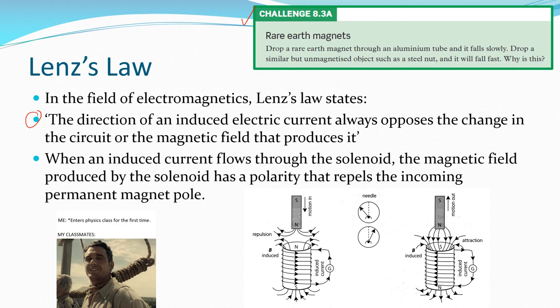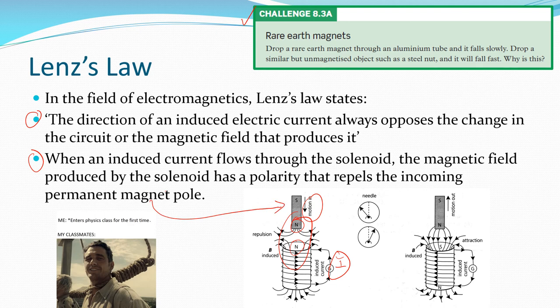If that's the north coming in, you want a field set up in your solenoid to oppose that motion. This magnet moving in generates a current — you don't want that current generated for free, so you have to put more effort in, making it feel like two magnets opposing each other. When an induced current flows through the solenoid, the magnetic field produced by the solenoid repels the incoming permanent magnet pole.